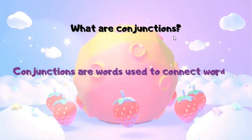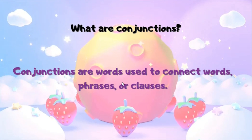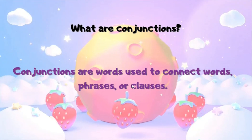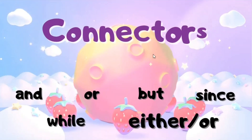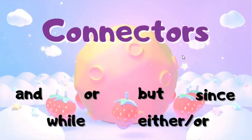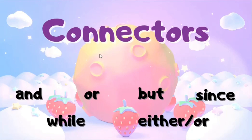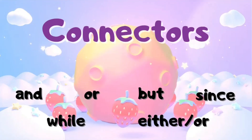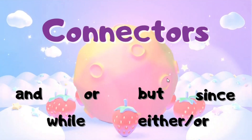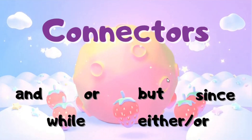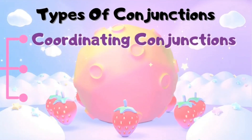The first question is: what are conjunctions? It's very simple. Conjunctions are words that are used to connect other words, phrases, or clauses. You can even say that they are connectors, because they connect words, phrases, and clauses and help you to write longer sentences or advanced structures. In today's video, we shall learn about the types of conjunctions and when you should introduce which one. So let's jump into it.